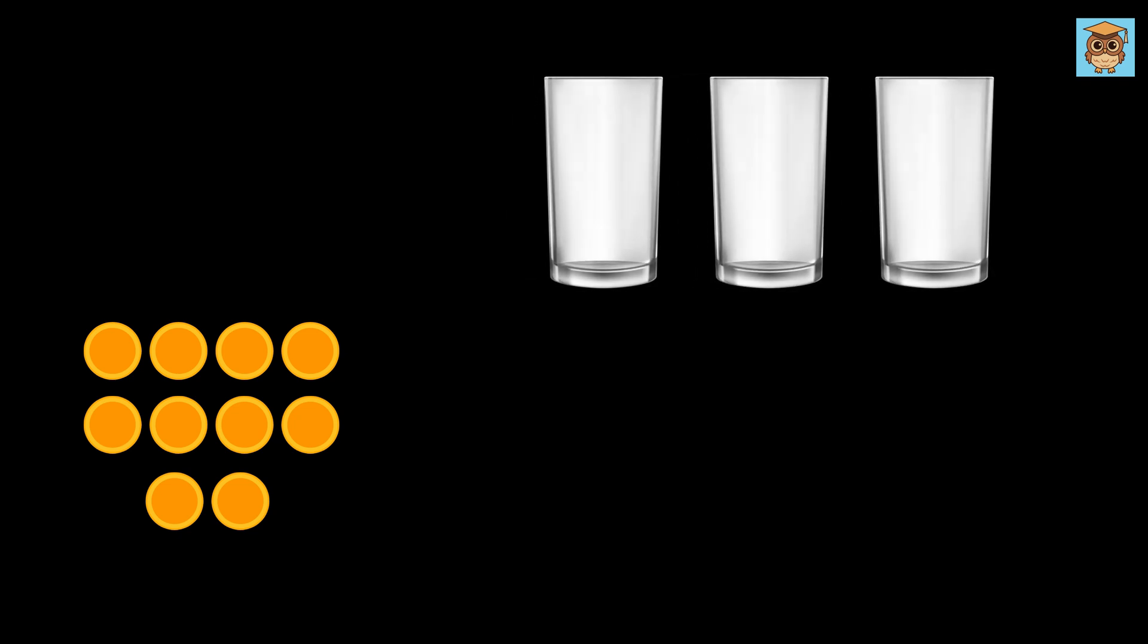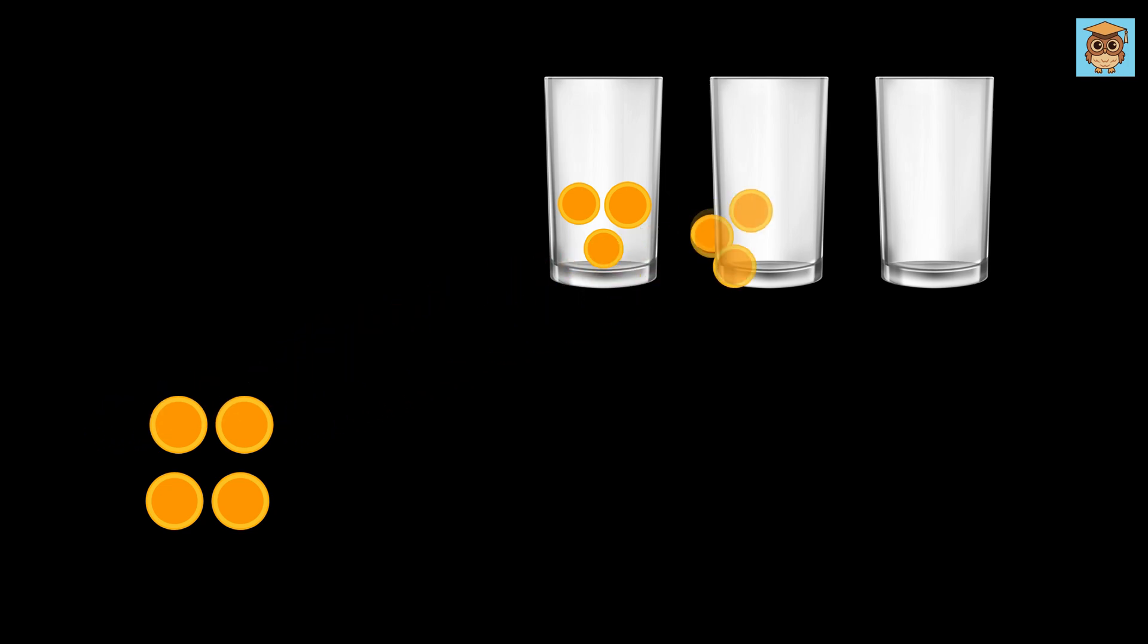For the next puzzle, how can you place 10 coins into three glasses so that each glass contains an odd number of coins? At first, this seems impossible, because three odd numbers cannot add up to 10, which is an even number. For example, if you try three coins in this glass, then three coins in this glass, and three coins in this glass, you only get nine coins, and one coin will be left.